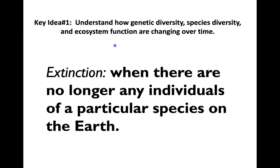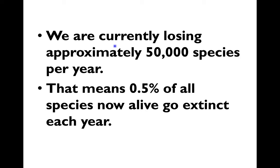Key idea number one: what are we talking about with genetic diversity? Let's define a couple things first — extinction. If something is extinct, there are no longer individuals of that species on Earth. We've heard of endangered and threatened species. Extinction means we're losing the species forever — they will never come back. Right now we're currently losing approximately 50,000 species of life per year, so 0.5% of all species now alive go extinct every year. That's a big issue. Environmental scientists are trying to figure out why this is happening and mitigate this biodiversity loss.